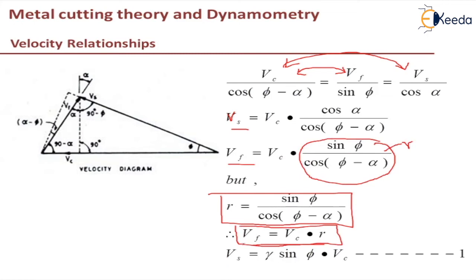Similarly, Vs will be equal to I am substituting it for this Vs will be equal to gamma sin phi into Vc. So where gamma is a shear strain. So I will consider this as equation 1 which I will be using in the next slide.